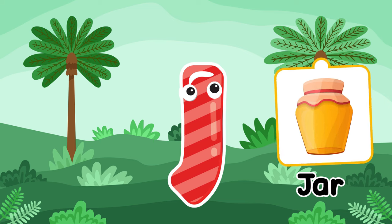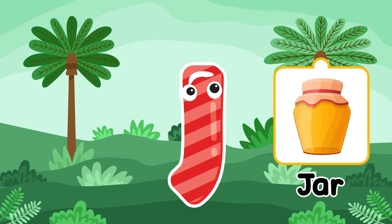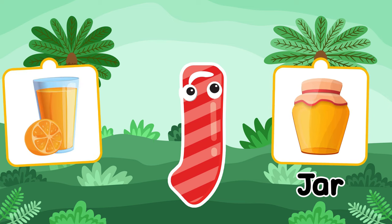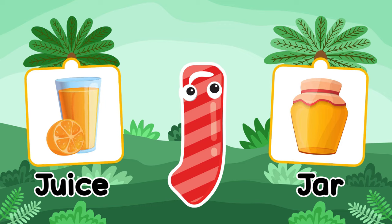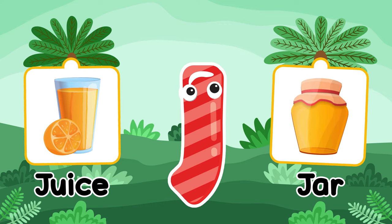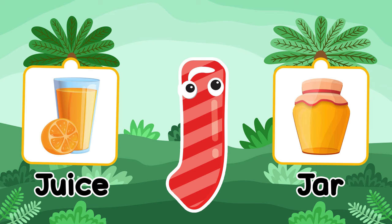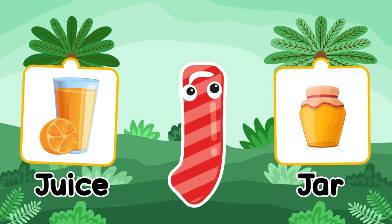I is for iron. J is for jar. J is for juice. J is for jar.